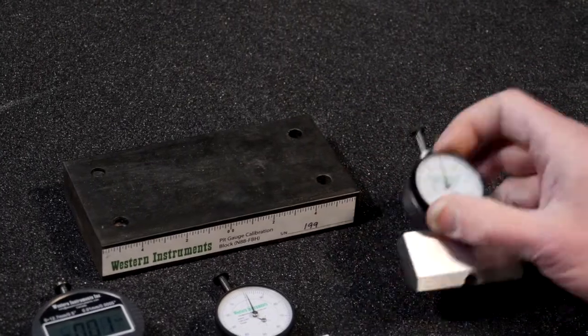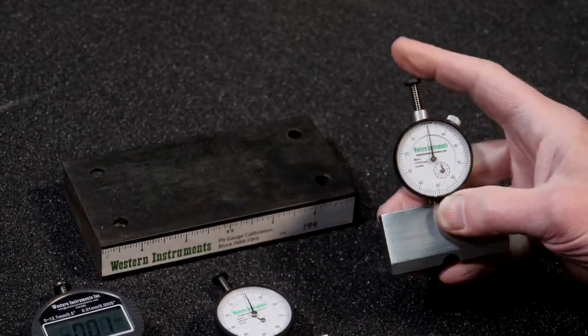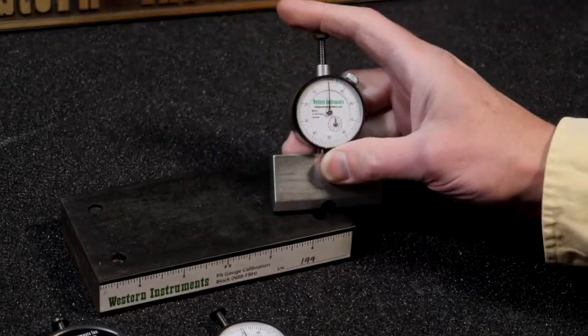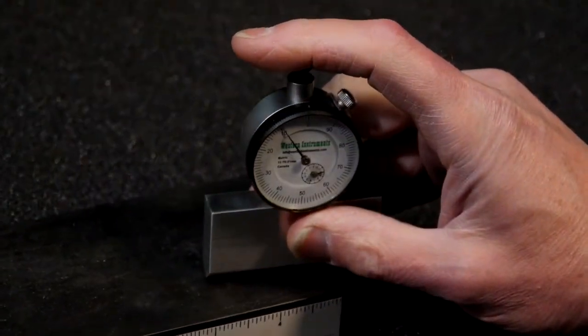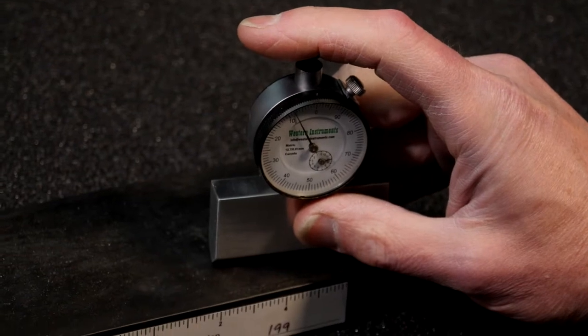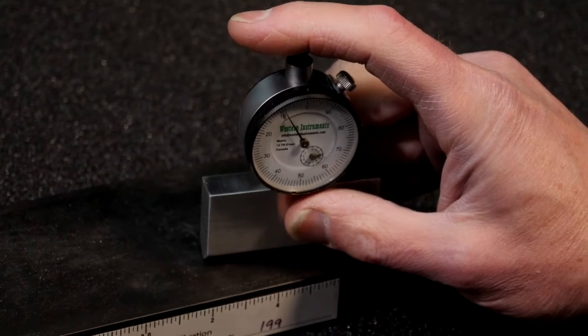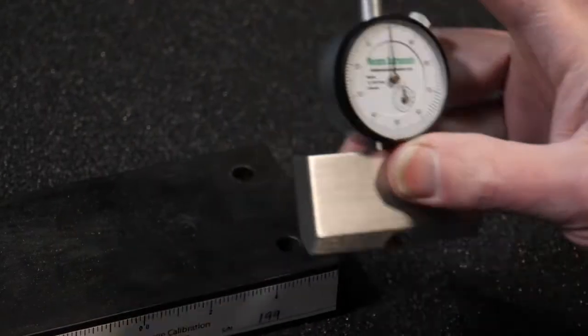Now, the revolution counter on the metric is very important when you see it start buzzing around like that. You can see there it's done approximately eight revolutions.